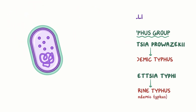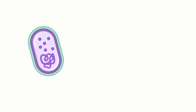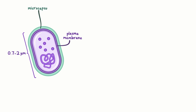Rickettsii are small bacteria, measuring only 0.7 to 2 micrometers in diameter. They have a plasma membrane that's surrounded by a microcapsule. And inside the bacteria, there's cytosol, which contains ribosomes and a single circular chromosome.